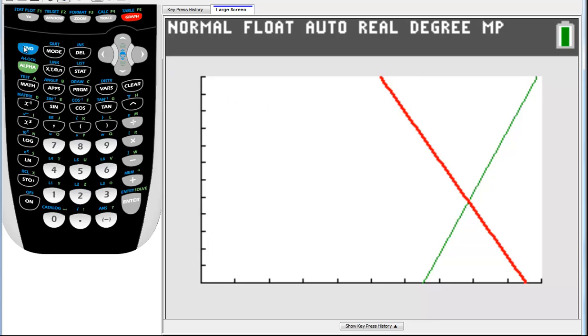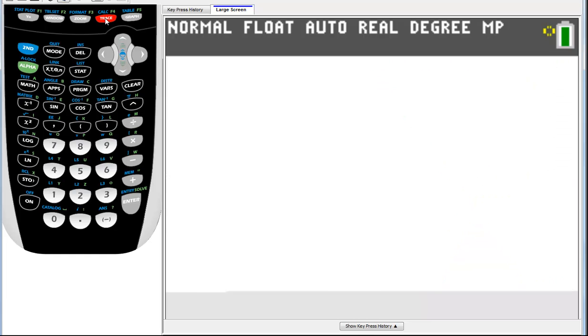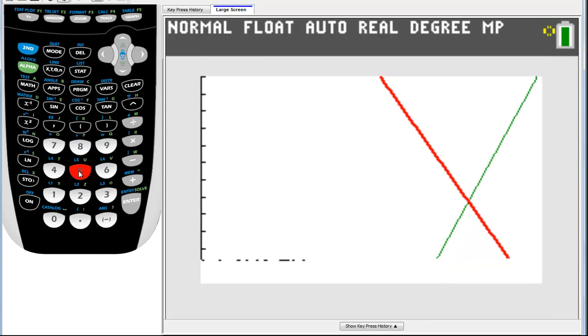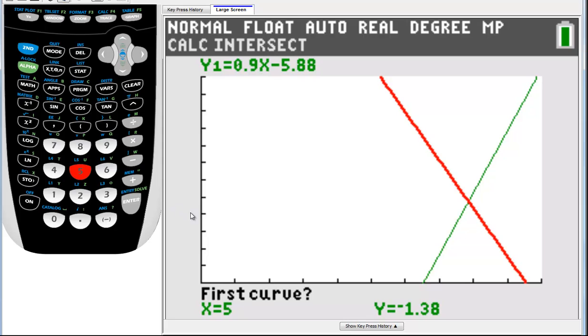Now I want to go find this intersection. So if you remember how you did that in your college algebra. Second. Calc. Let me go do number 5. So right now it's at 5 and negative 1.385. So it's over here. And it's also color coordinated saying what equation it's on. So let me bring it back in.